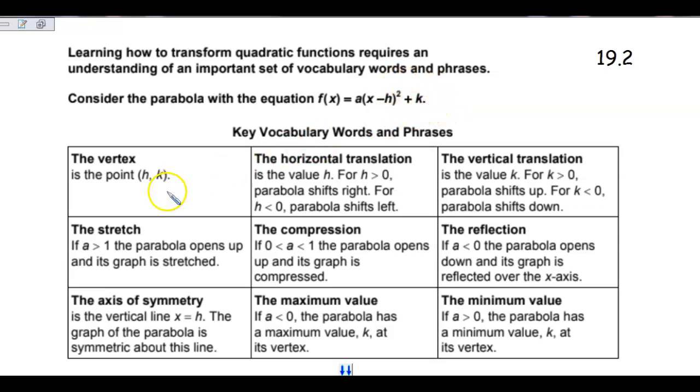Remember that the vertex is at h and k. So this h, because it is minus h, if h is a positive number, then it would be just x minus, say, 2. But if it was x plus 2, then it would be x minus the negative of h. So be very careful when you see those.